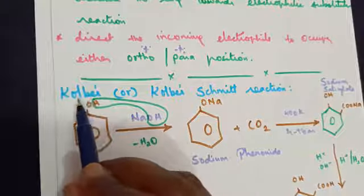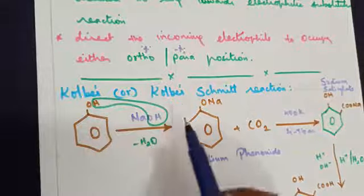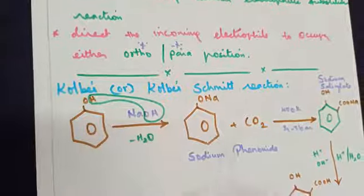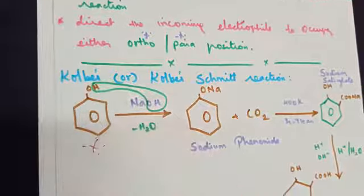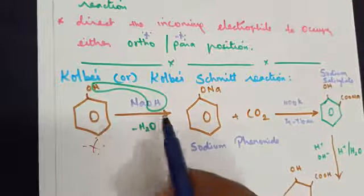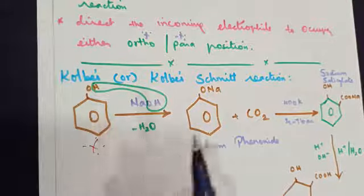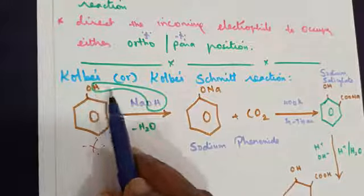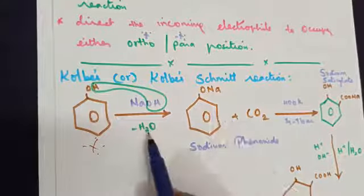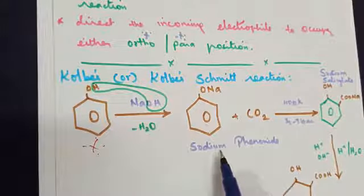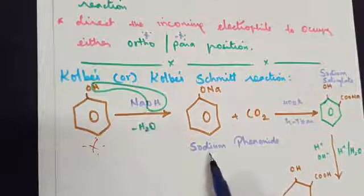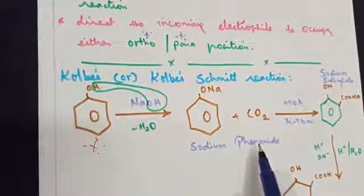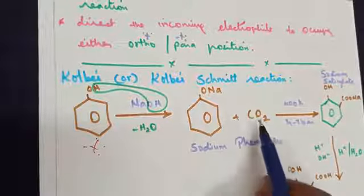Moving to the chemical properties — the very first one is Kolbe's reaction, or the Kolbe-Schmidt reaction. A very easy yet very important reaction. When phenol is treated with sodium hydroxide, the OH combines with H and goes out as a water molecule, giving us sodium phenoxide as the main product.